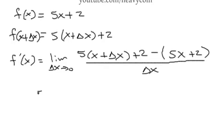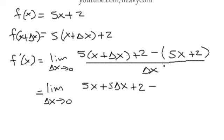What we'll want to do now is, we always need to rewrite our limit delta x approaches zero. Let's clean this up. Here we have 5x plus, distributing that 5 across, 5 delta x plus 2 minus 5x and then minus 2. We want to distribute this negative across, and that's all over delta x.